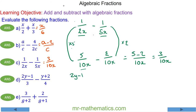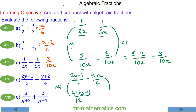For question D we have (2y minus 1) over 3 minus (y plus 2) over 4. The lowest common multiple of 3 and 4 is 12. We multiply the numerator and denominator of the first fraction by 4, giving 4 lots of (2y minus 1), and multiply the numerator and denominator of the second fraction by 3, giving 3 lots of (y plus 2), all over 12.